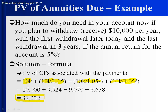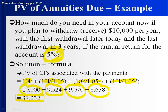If we had $10,000 in our account today, we'd be able to withdraw $10,000 today. If we put in $95.24 today and it earned 5%, in one year we'd get $10,000. $90.70 earning 5% for two years would be $10,000. And $86.38 at 5% for three years gives us $10,000. That's why $37,232 would allow us to get $10,000 today, in a year, in two years, and in three years.